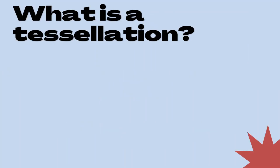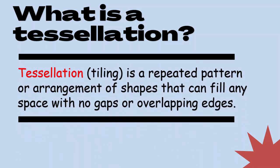What is a tessellation? A tessellation or tiling is a repeated pattern or arrangement of shapes that can fill any space with no gaps or overlapping edges.